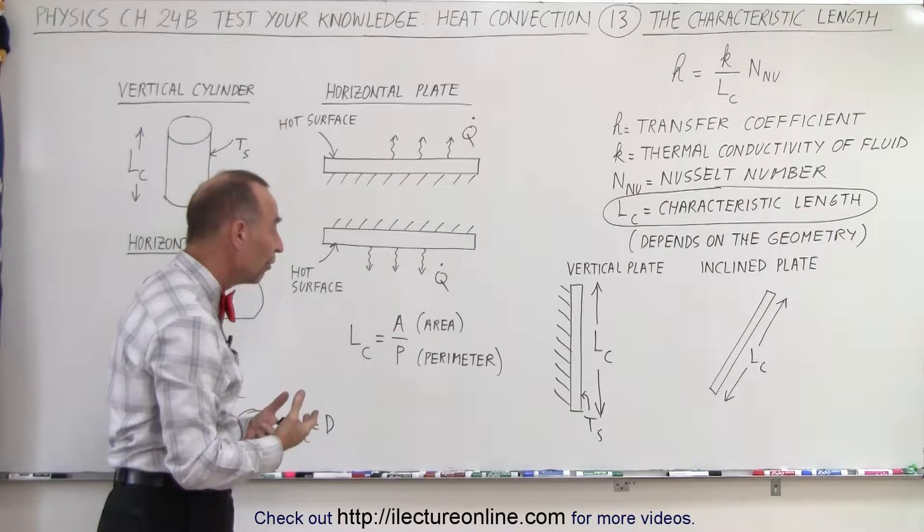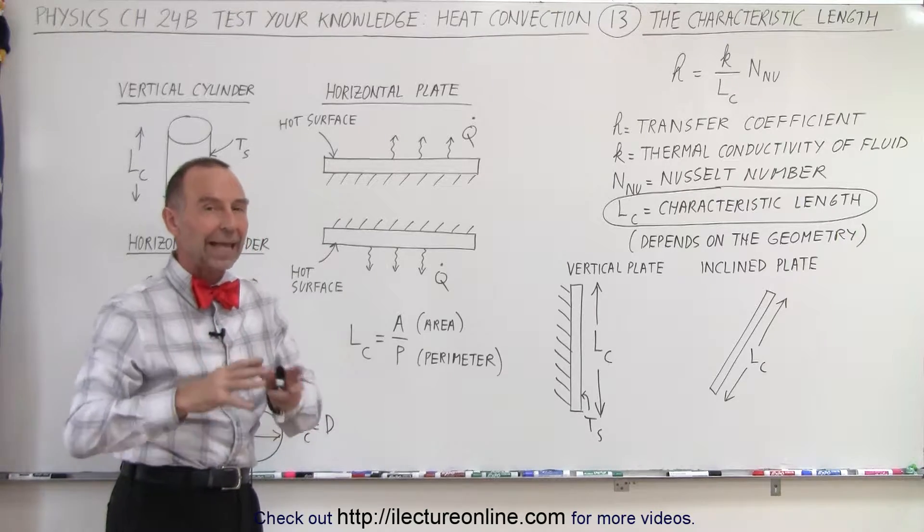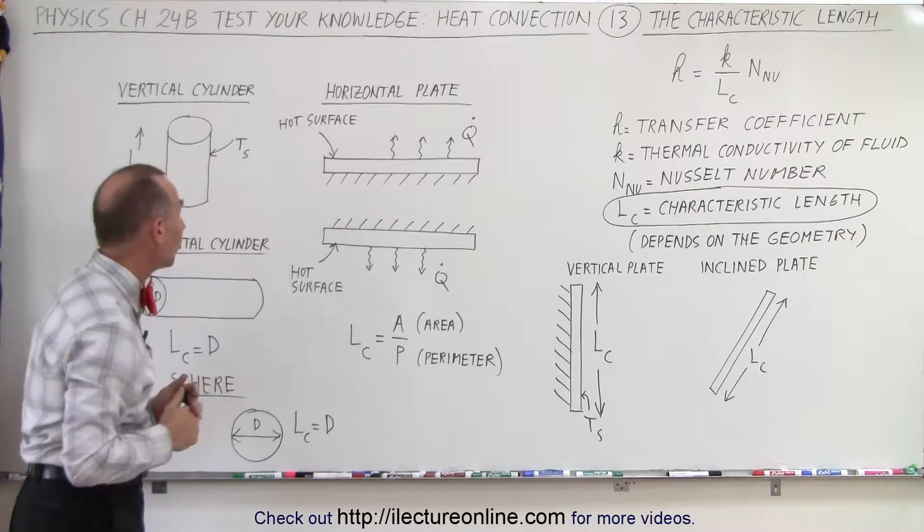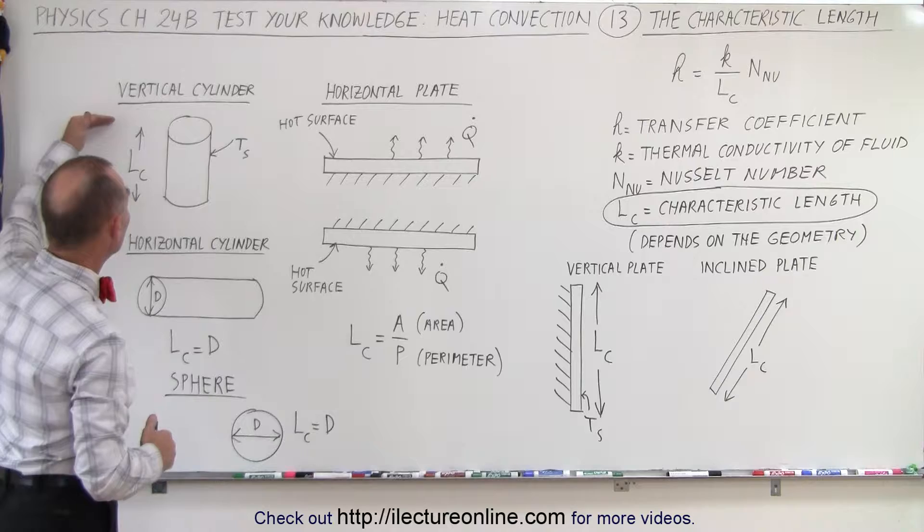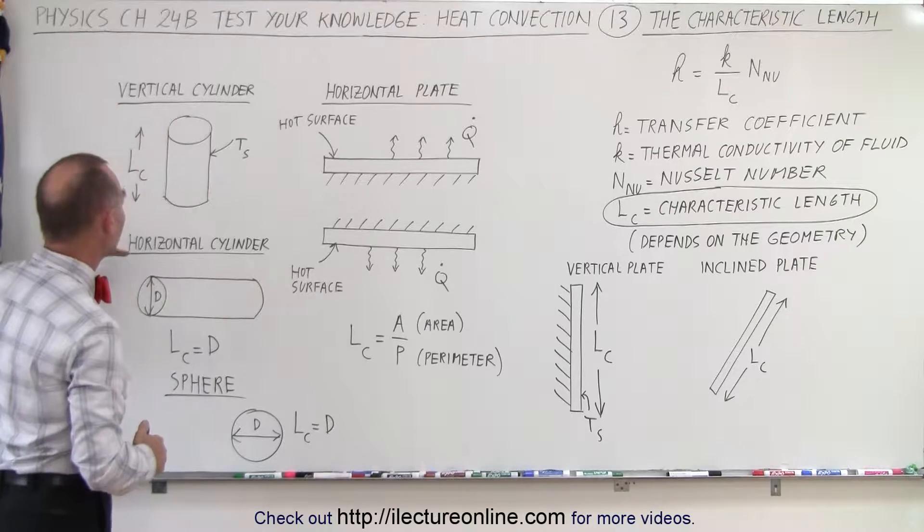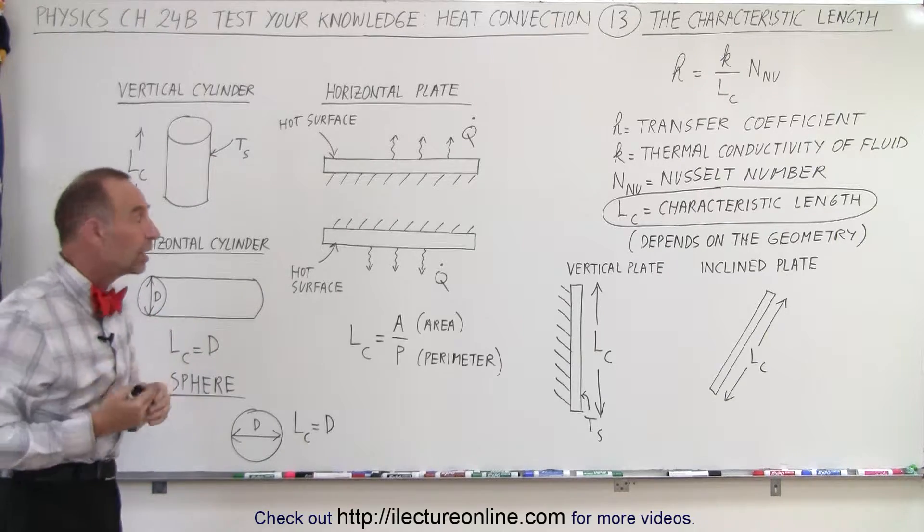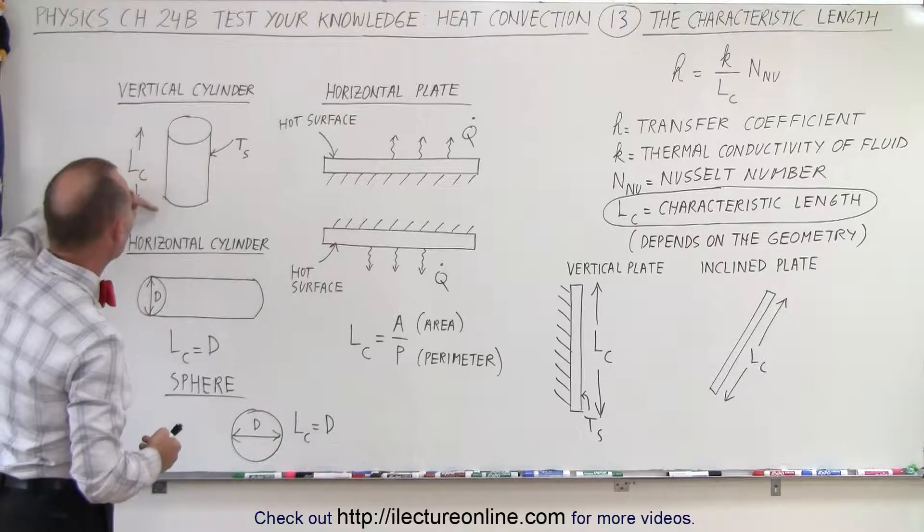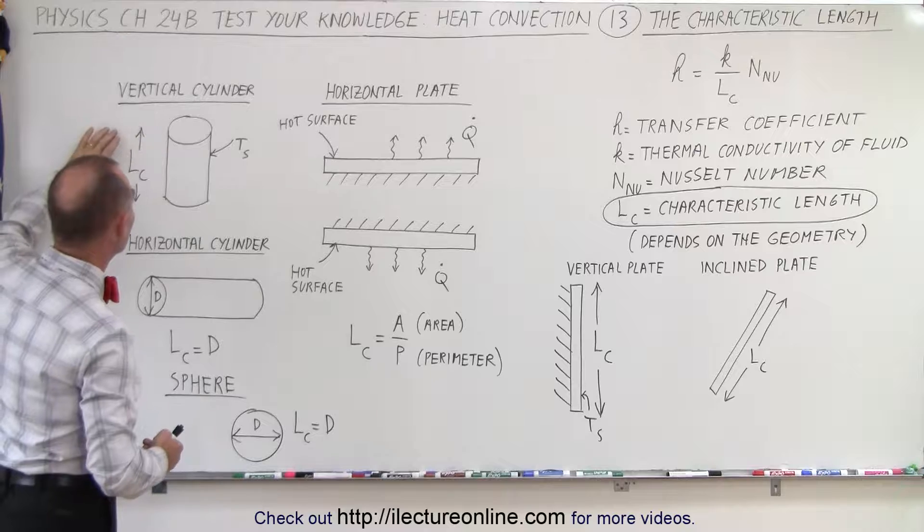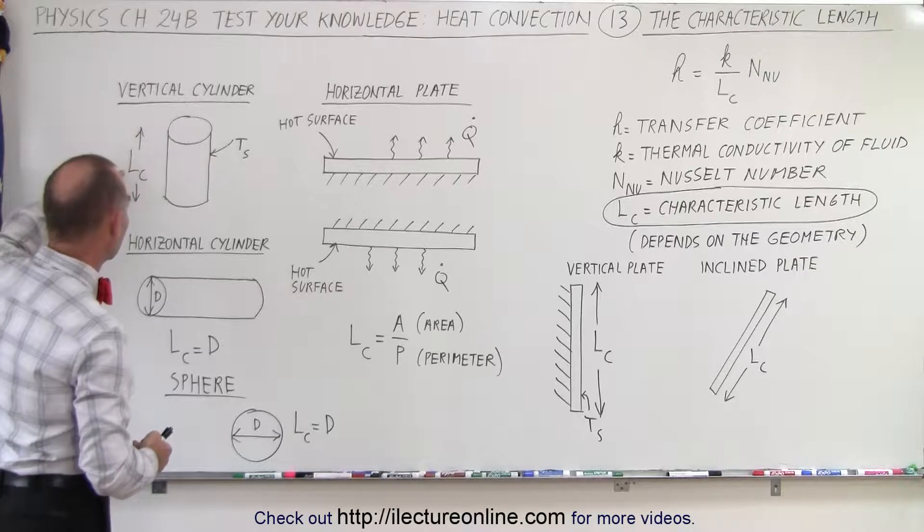Then if we have cylinders, either a vertical cylinder or a horizontal cylinder, it depends upon which side of the cylinder is being subject to the airflow. So here you can say that we have a vertical cylinder. We take the length or the height of the cylinder as being the characteristic length.